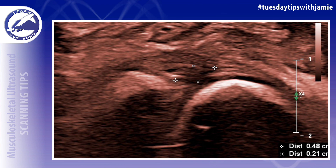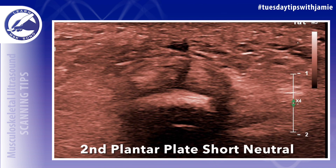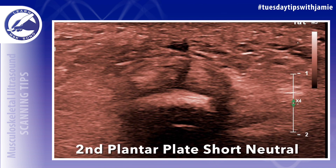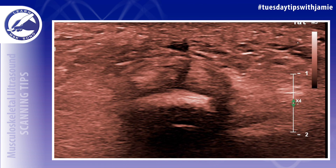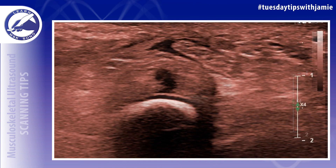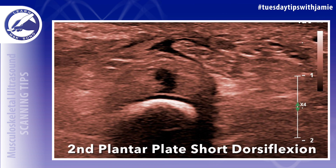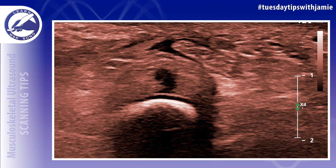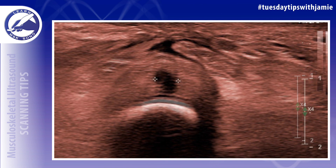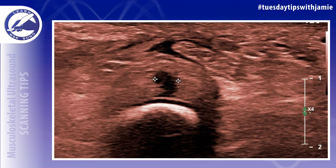A finding of fibrosis may be visualized in the web space adjacent to a plantar plate tear and must be differentiated from Morton's neuroma. The main difference in appearance is that fibrosis will be seen hugging the metatarsal head along the MTP joint capsule, whereas a neuroma will be seen in the center of the web space and will be continuous with the plantar digital nerve.